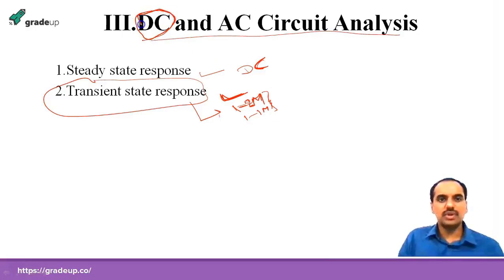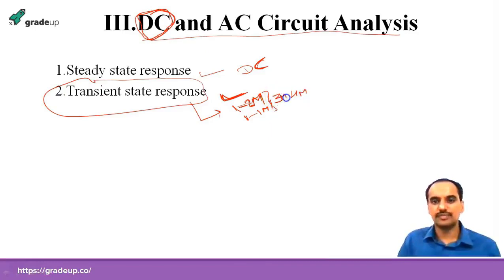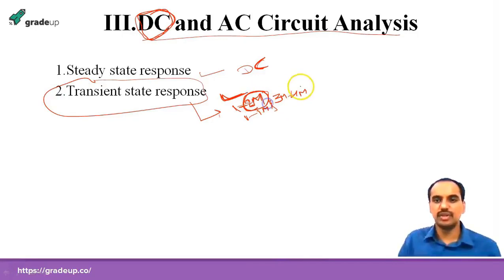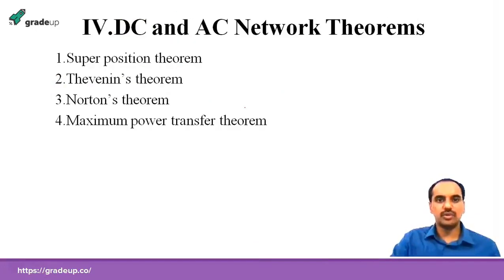Concentrate on DC circuit transient response, as it will definitely yield one two-mark question and one one-mark question. Maximum expected marks from this topic is four; minimum is two or three marks. This is the third important topic in Electric Circuits.